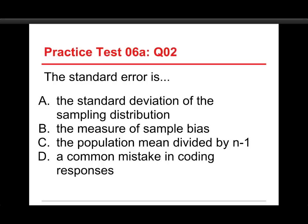Number two: the standard error is: A, the standard deviation of the sampling distribution; B, the measure of sample bias; C, the population mean divided by n minus 1; and D, a common mistake in coding responses. Well, the answer is A, the standard deviation of the sampling distribution. I'll show you that in a second.